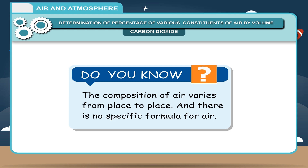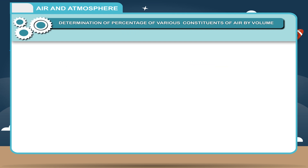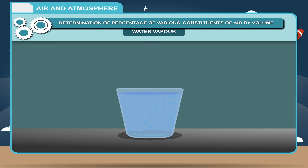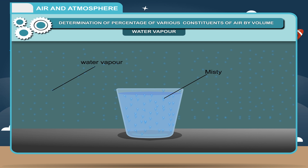The composition of air varies from place to place and there is no specific formula for air. As a common observation, when you pour cold water in a glass, the outer surface first looks misty and later you see water trickling down. This is because the cold glass walls cause water vapor present in air to condense on the outer surface, proving that air contains water vapor.